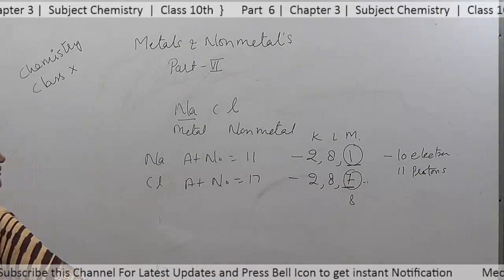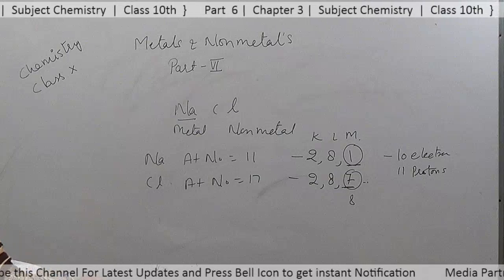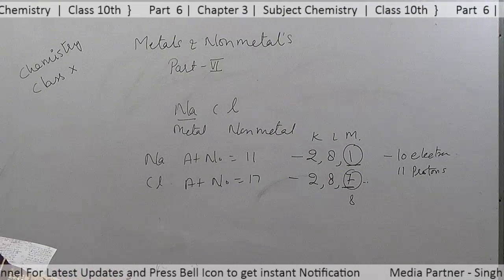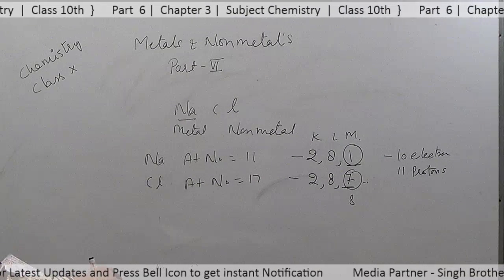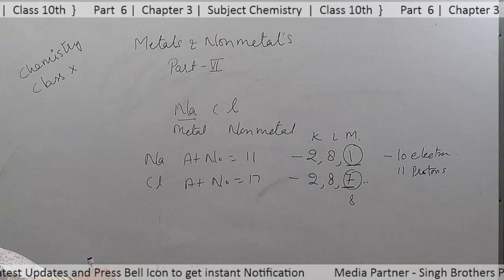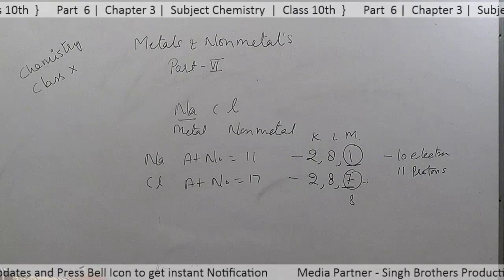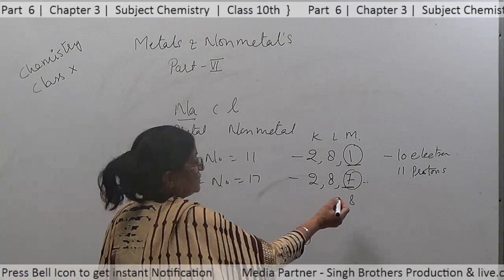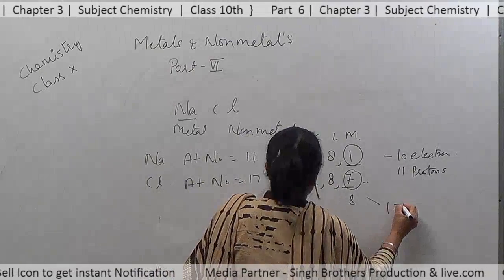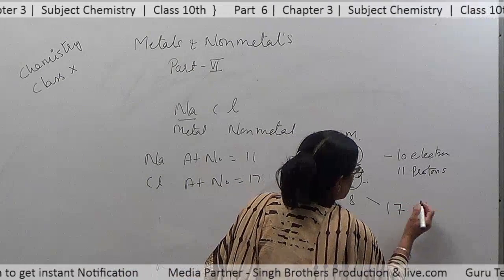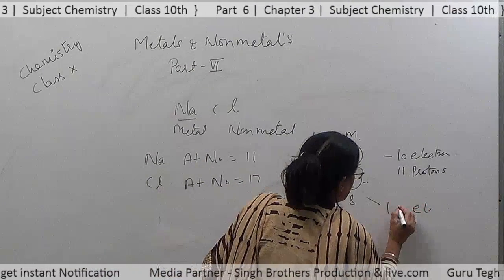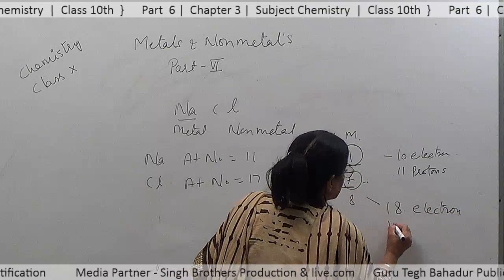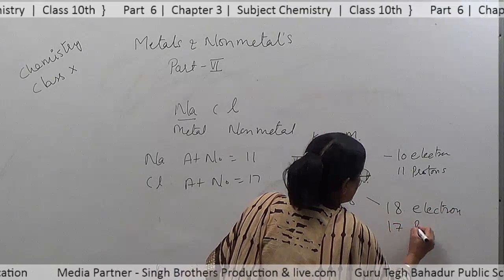After chlorine gains 1 electron, its nucleus will have 17 protons but now 18 electrons, giving it a unit negative charge.